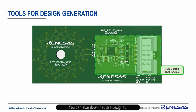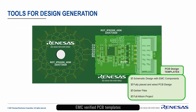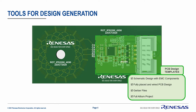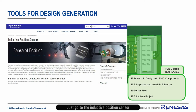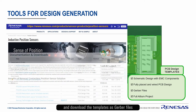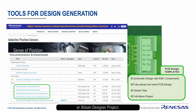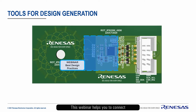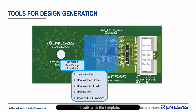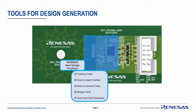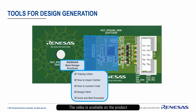You can also download pre-designed, EMC-verified PCB templates as Altium project files or Gerber data. Just go to the Inductive Position Sensor landing page at Renesas.com and download the templates as Gerber files or Altium Designer project. This webinar helps you to connect the coils with the template. The video is available on the product landing page at Renesas.com.